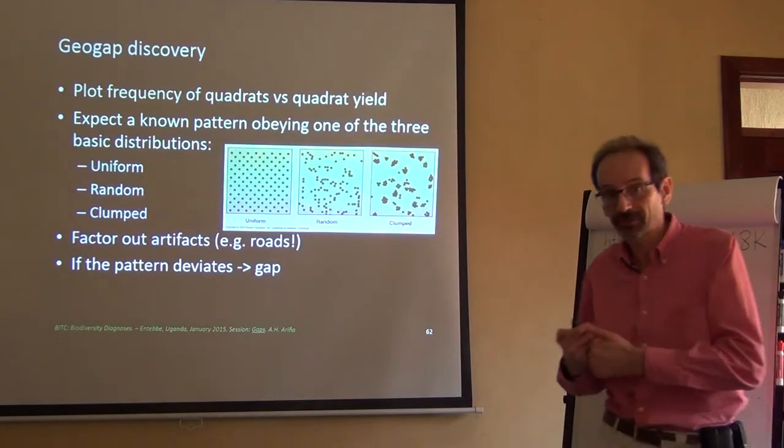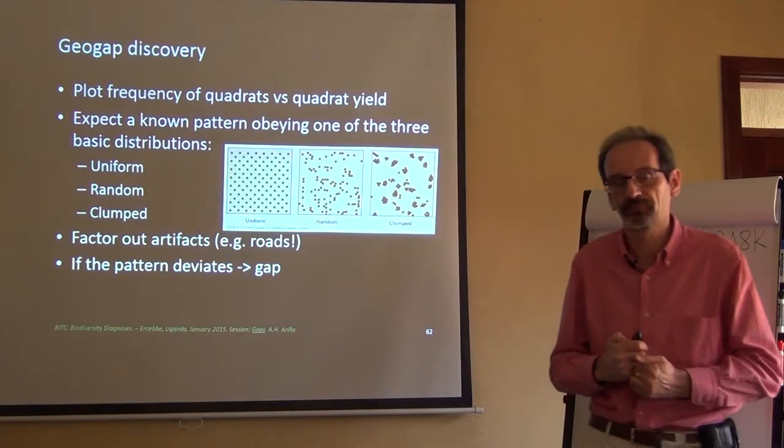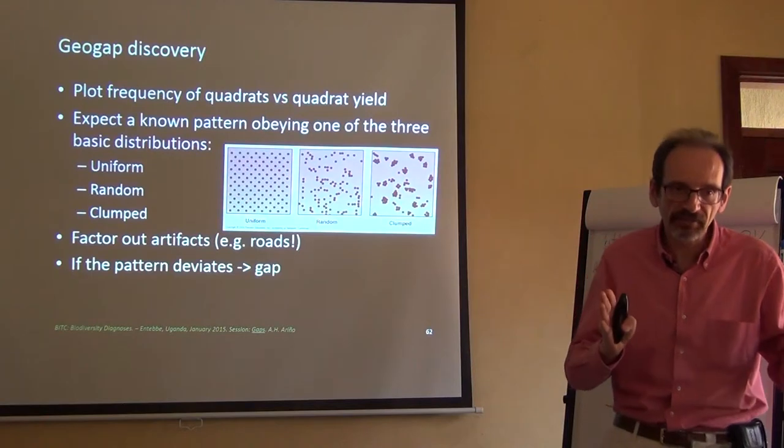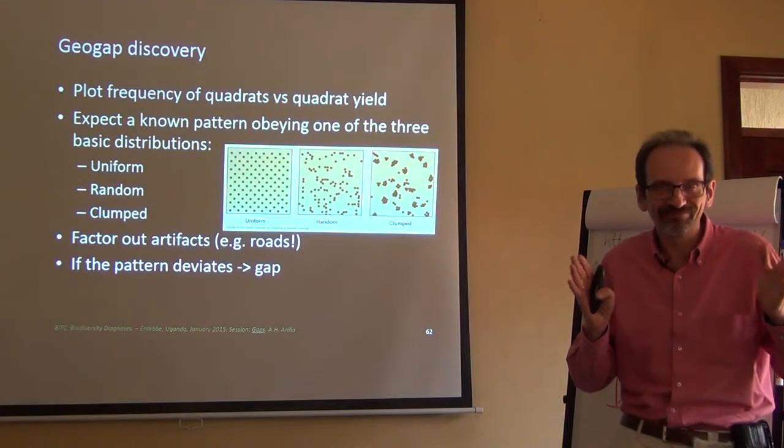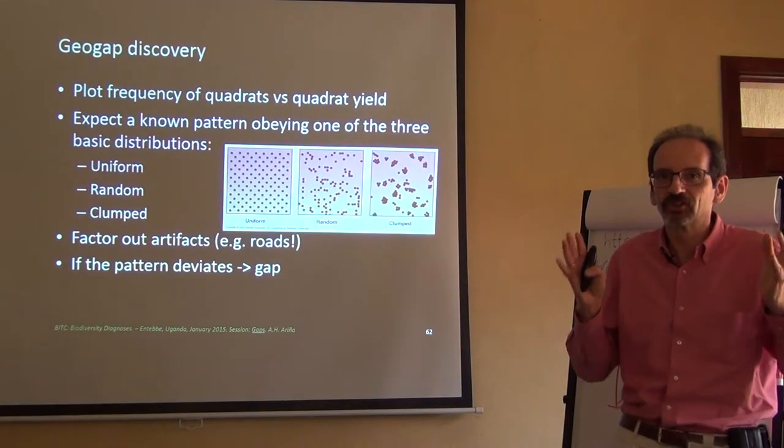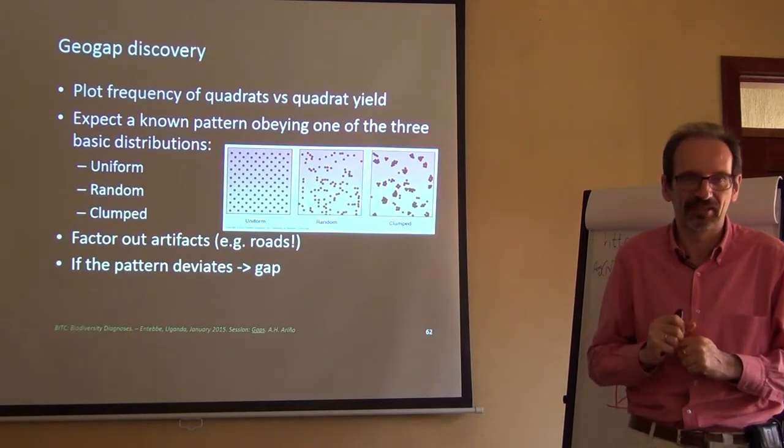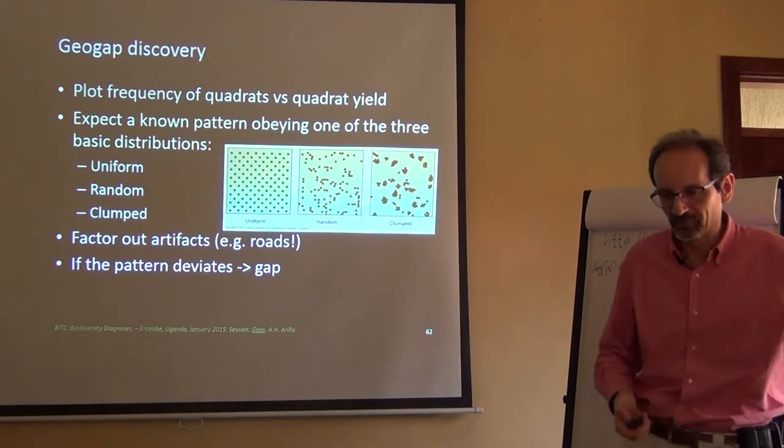If we see a pattern that deviates from what we expect, then we might suspect there is a gap. We'll find gaps by looking at patterns that, to say it simply, don't look right, like a void area in Mongolia or whatever.